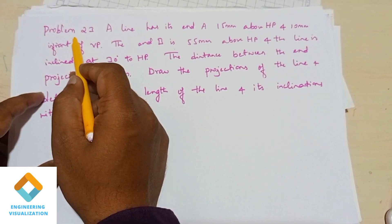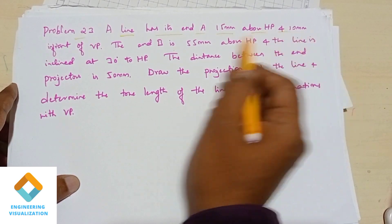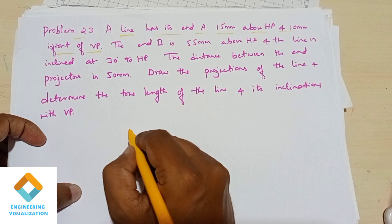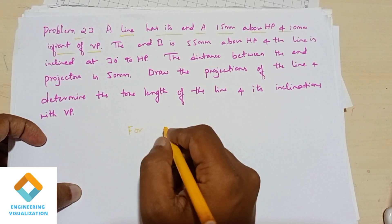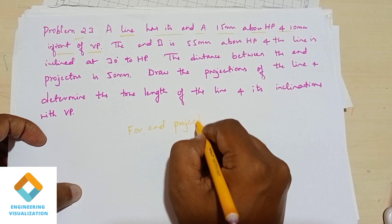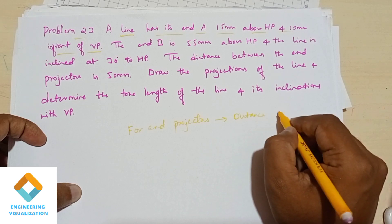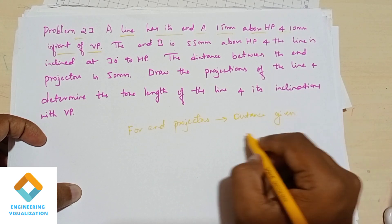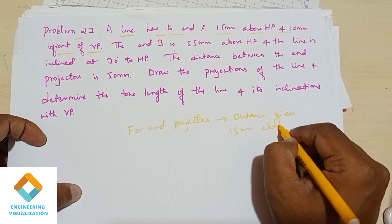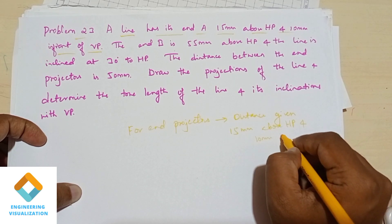Welcome to Engineering Visualization Channel. Today we are going to do problem number 23. A line has its end A 15 mm above HP and 10 mm in front of VP. For the end projectors, the distance given is 15 mm above HP and 10 mm in front of VP.